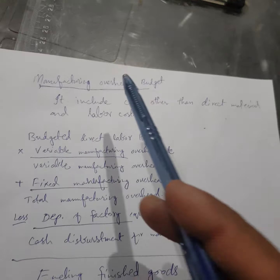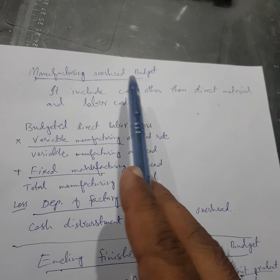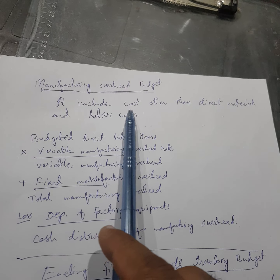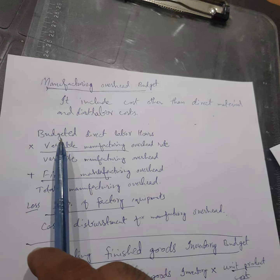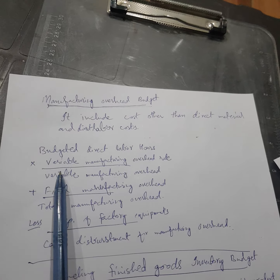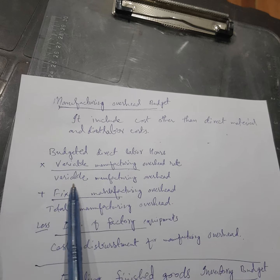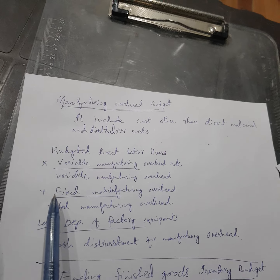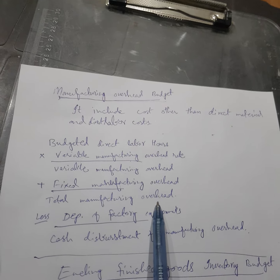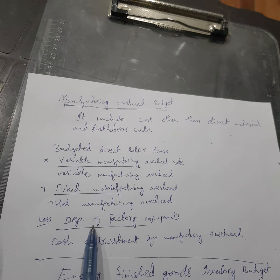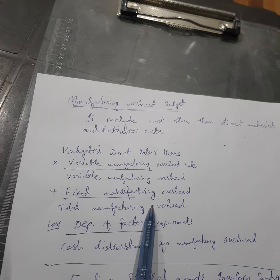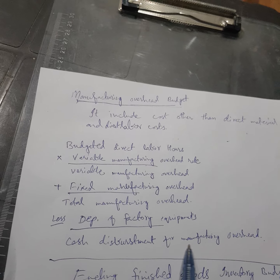Then comes the manufacturing overhead budget. It includes costs other than direct material and direct labor. We use budgeted direct labor hours, multiply them with the variable manufacturing overhead rate to get variable manufacturing overhead, then add fixed manufacturing overhead to get total manufacturing overhead. We deduct the depreciation of factory equipment, and the result is the cash disbursement for manufacturing overhead.